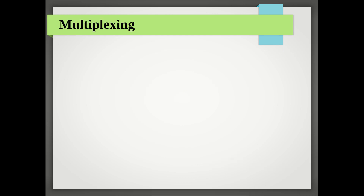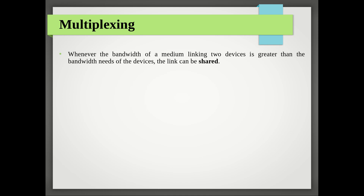Let's start with the introduction to multiplexing. Whenever the bandwidth of a medium linking two devices is greater than the bandwidth needs of the devices connected to that link, the link can be shared. You have a common medium to which you are connecting different devices - device one, device two, etc. Now suppose the individual requirement of each device is a very small data rate compared to the capacity of the media.